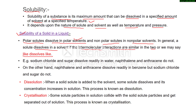It means polar solutes dissolve in polar solvents and nonpolar solutes dissolve in nonpolar solvents. For example, sodium chloride is an ionic compound and is readily soluble in water, which is a polar solvent. While sugar is not an ionic compound but is again soluble in water because sugar is able to make hydrogen bonds with water. While naphthalene and anthracene are covalent, nonpolar molecules — not soluble in water. Naphthalene and anthracene are readily dissolved in benzene, which is a nonpolar solvent, but sodium chloride and sugar do not.